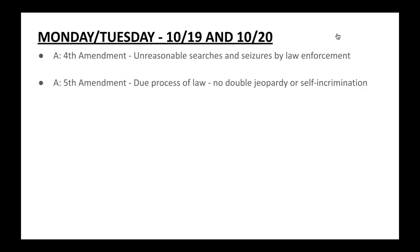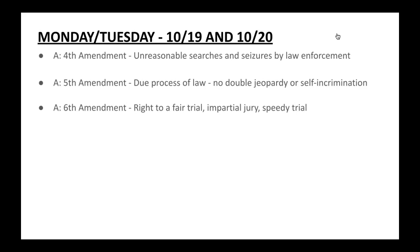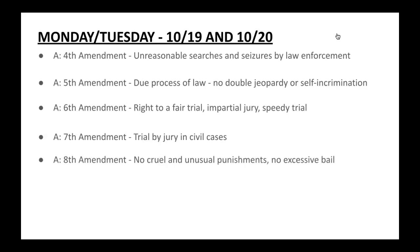Under the Fifth Amendment, you cannot be tried for the same crime twice, which is double jeopardy, and you cannot be forced to testify against yourself, which is called self-incrimination. The Sixth Amendment is a right to a fair trial, an impartial jury, and also a speedy trial — you can't just be thrown in jail for a prolonged period of time. The Seventh Amendment deals with being guaranteed a trial by jury in civil cases, and the Eighth Amendment deals with no cruel and or unusual punishments, and also no excessive bail.